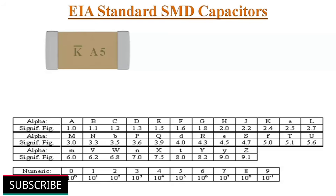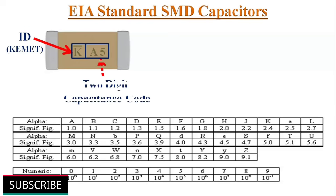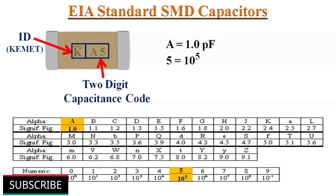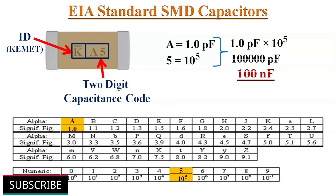If K with a small bar on top and A5 is printed on an SMD ceramic capacitor surface, K indicates the manufacturer's ID, and A5 is the two-digit EIA standard SMD capacitor code. Here A indicates 1 pF, and 5 indicates a multiplier of 10 to the power of 5, so it is a 100 nanofarad capacitor.